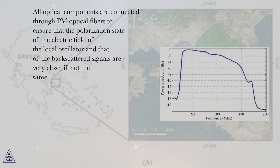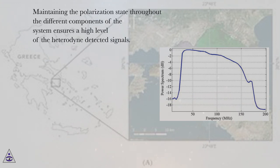All optical components are connected through polarization-maintained (PM) optical fibers to ensure that the polarization state of the electric field of the local oscillator and that of the backscattered signals are very close, if not the same. Maintaining the polarization state throughout the different components of the system ensures a high level of the heterodyne detected signals.